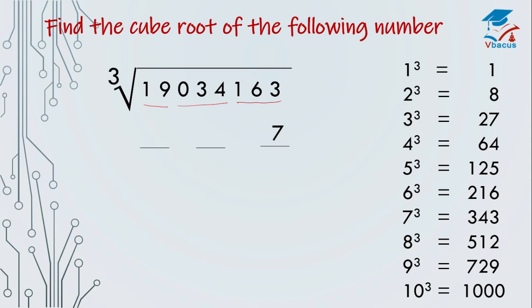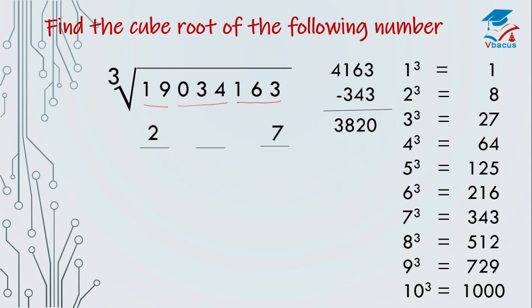Now we have to check the hundreds place. Where does 19 lie here? 19 falls in between 8 and 27, so we have to choose the smaller one. Cube root of 8 is 2. Now we have to find the middle digit. Listen carefully — here we have to do some steps. First of all, we have to subtract the cube of 7, that is 343, from the first part, that is 163. Since 163 is less than 343, I have taken one more digit: subtract 343 from 4163 — answer is 3820.